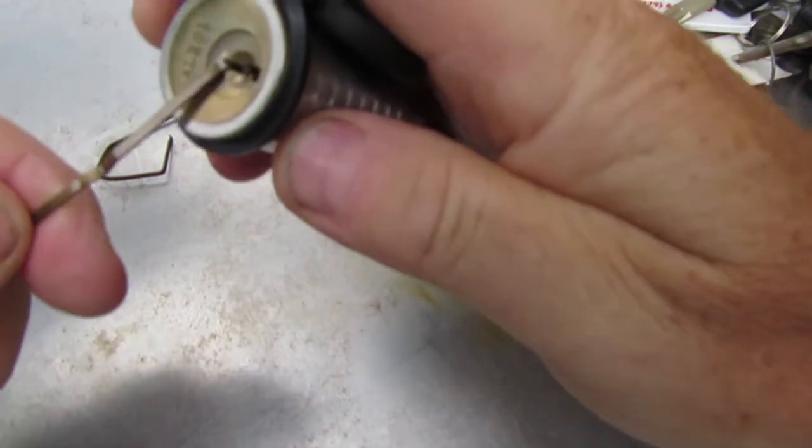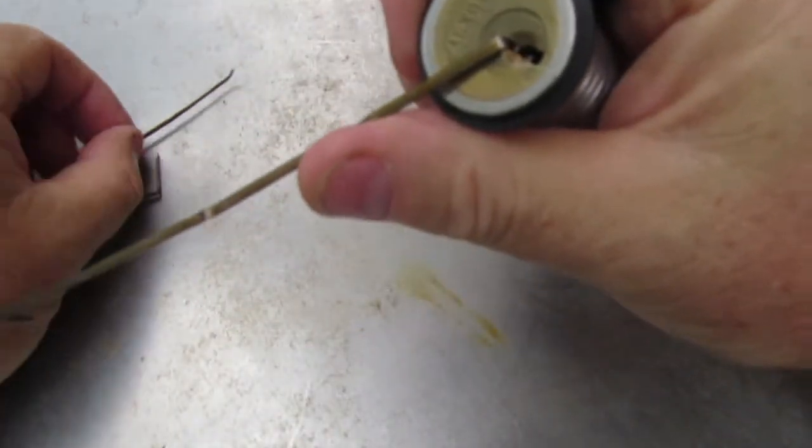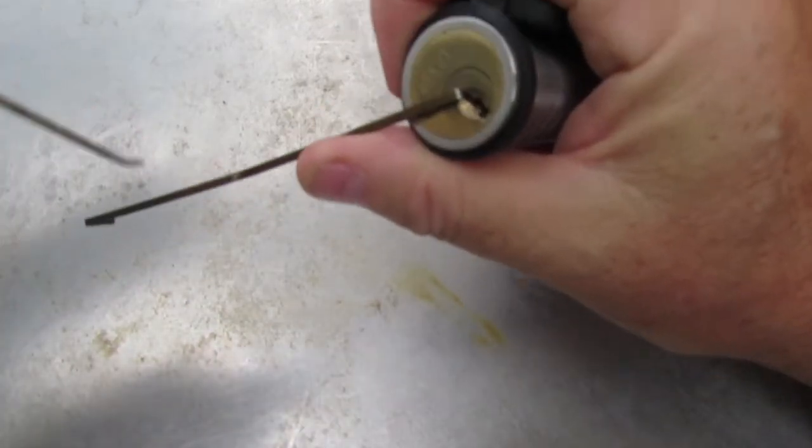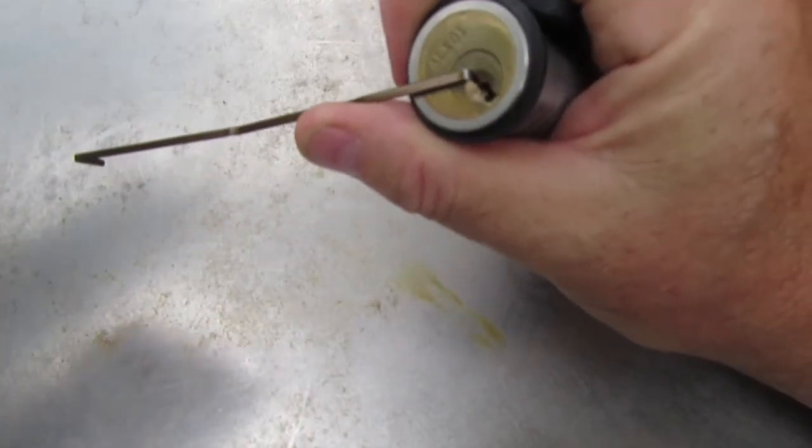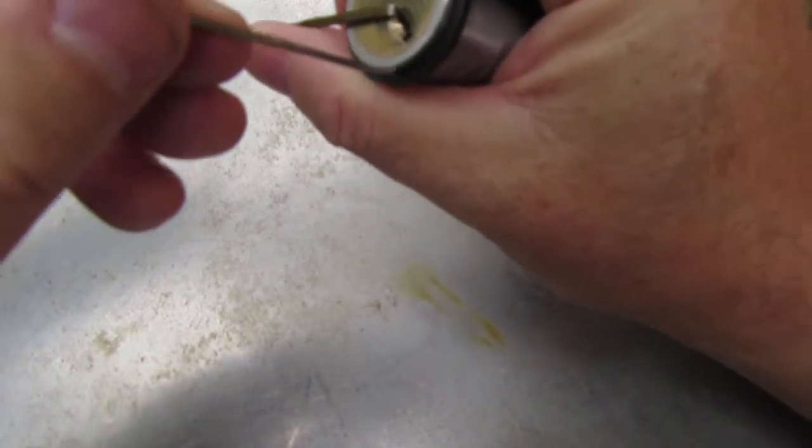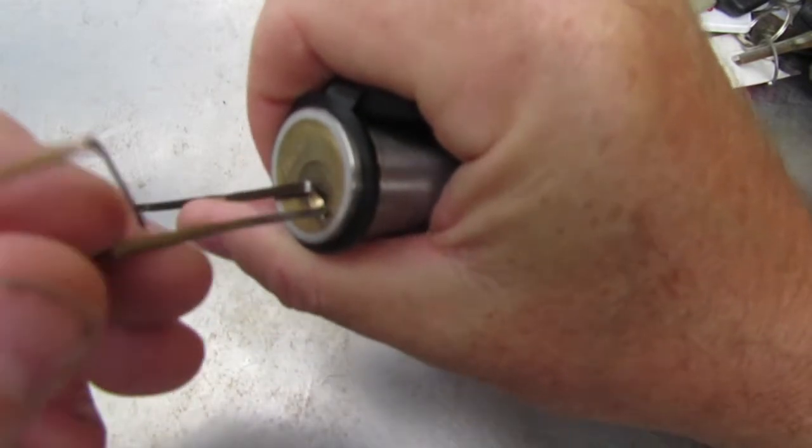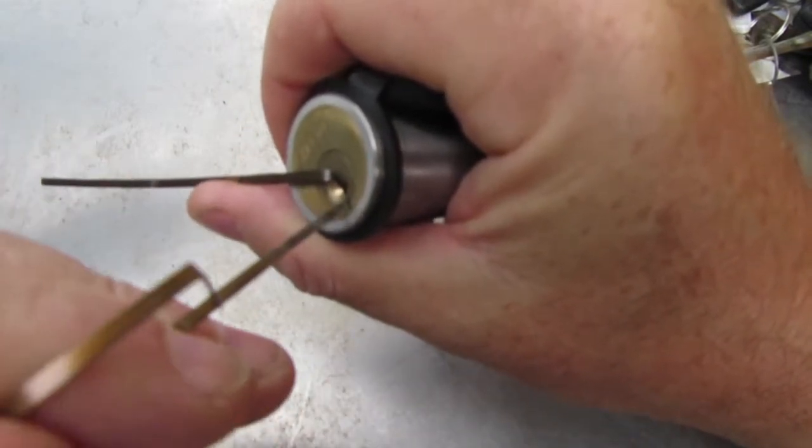Alright, here we go. I'm using bobby pins for the lever and for the pick, and I'm going to be picking upside down to what I normally do. So let's get in and get it done.